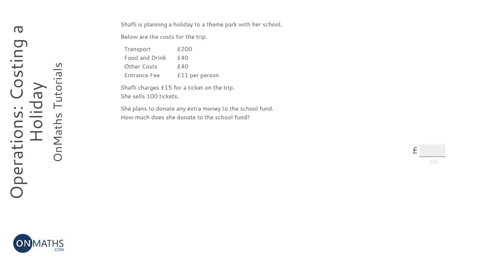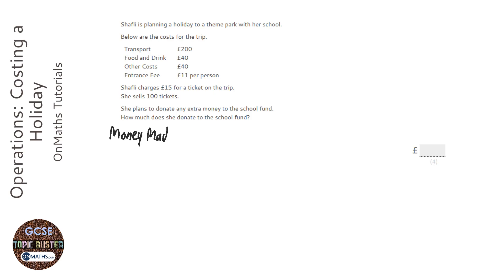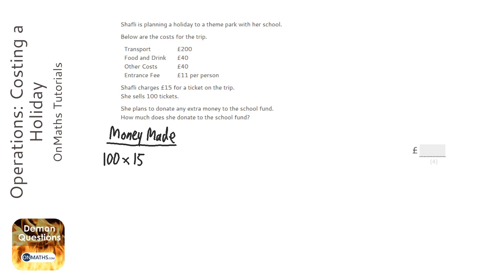This seems quite a complicated question, but it's one of those questions that if you break down each step is a little bit easier than you think. The first thing I would do is work out how much money Shafi is making. She's charging 15 pounds a ticket and she sells a hundred tickets, so it's going to be 100 times 15, which is 1500 pounds.